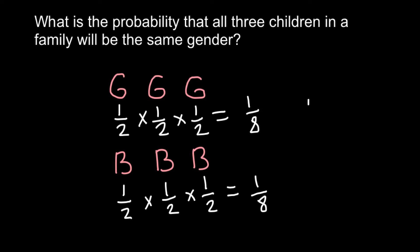So we have to add one eighth probability that all three children would be girls and one eighth probability that all three children would be boys. And the answer here would be one fourth, or 0.25, or 25 percent. So all these answers are the same.